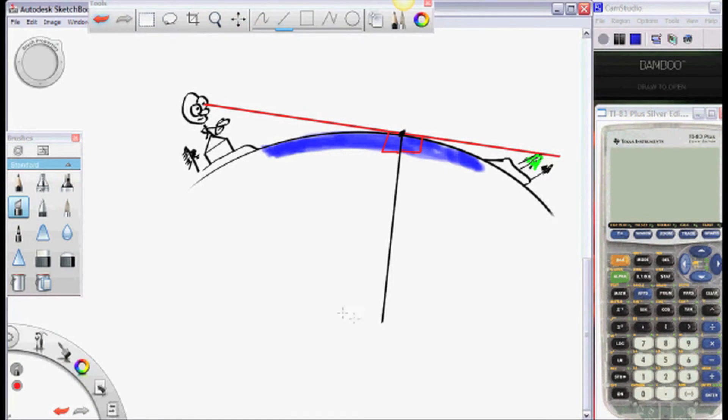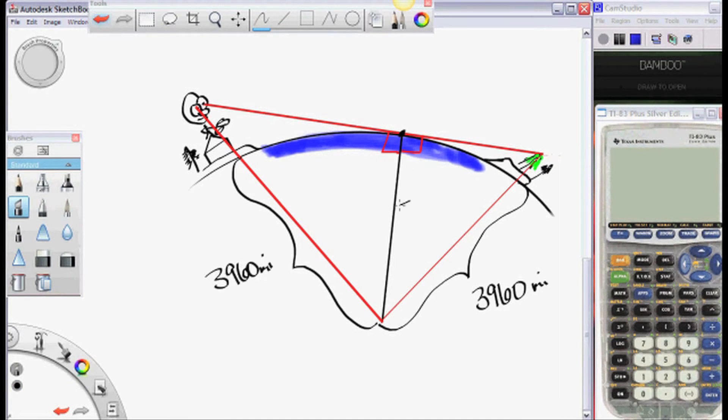Well, we can create two right triangles, and they're going to share some of the same information. We know the radius of the Earth is 3,960 miles, approximately.